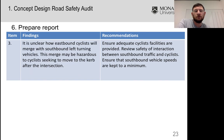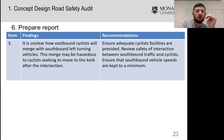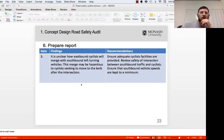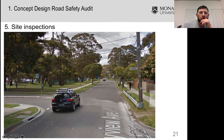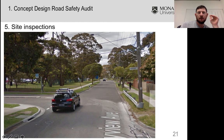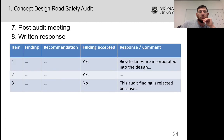Finding number three: it's not clear how eastbound cyclists will merge with southbound left-turning traffic. This is a related finding — cyclists going eastbound will have to merge with traffic that has gone around the slip lane, creating a potential merge conflict at that point.